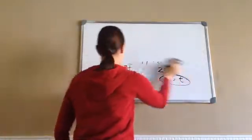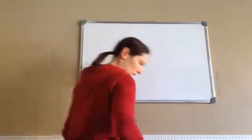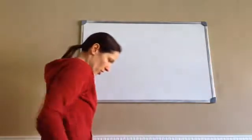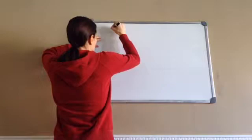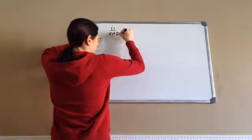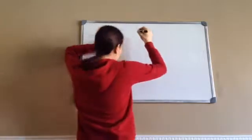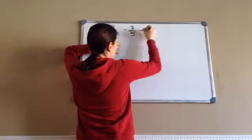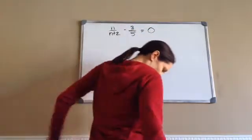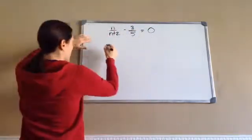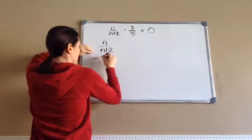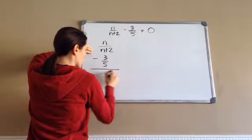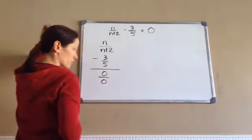Do a few more. Now, each time, I don't want you to stop it because each time it gets a little bit harder. So, pay attention. Here we go. So, N over N plus 2 minus 3 fifths equals 0.